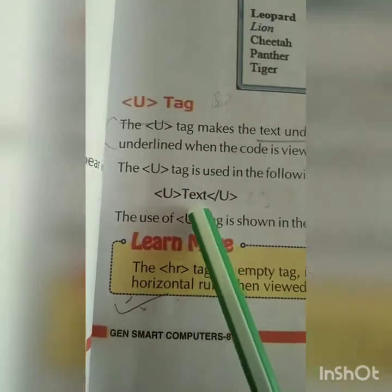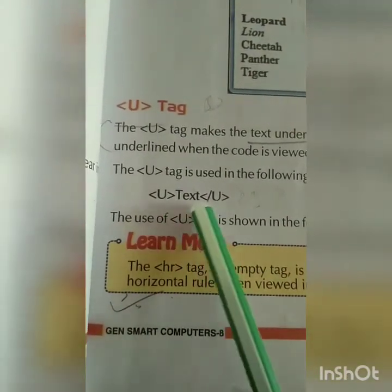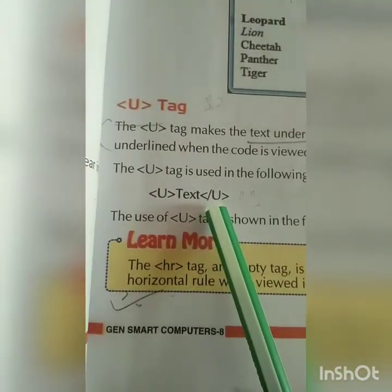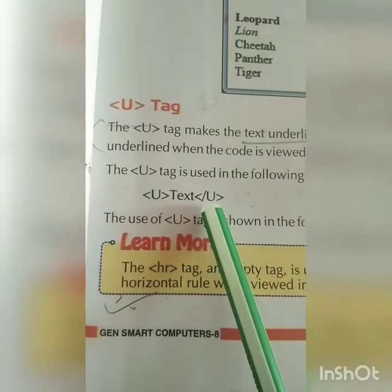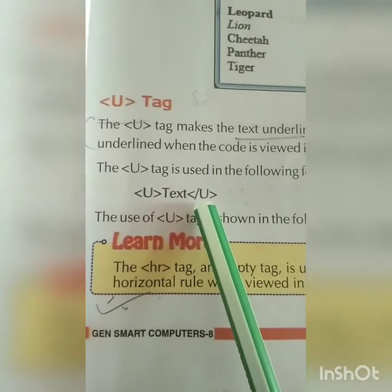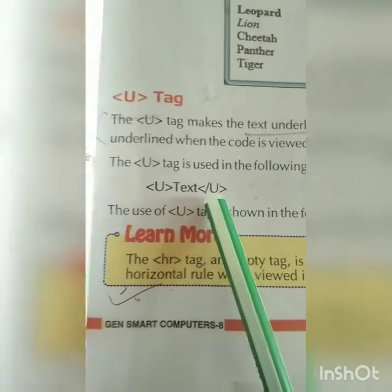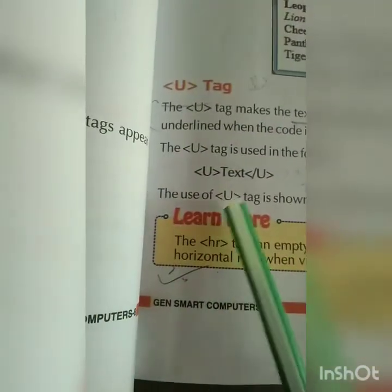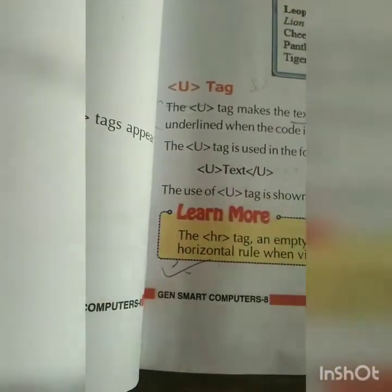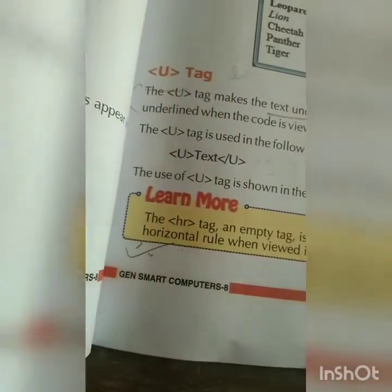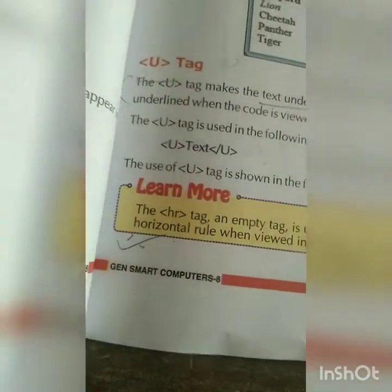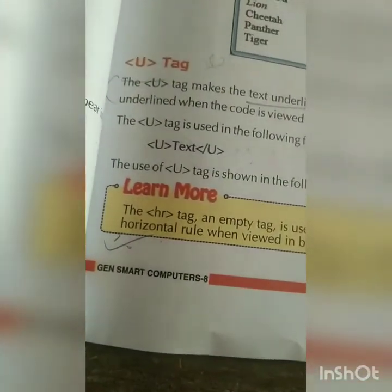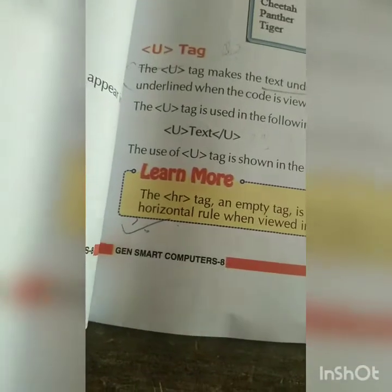This is the format you are going to write for the underline text — starting and ending tags around whichever word, sentence, or paragraph you want to underline.